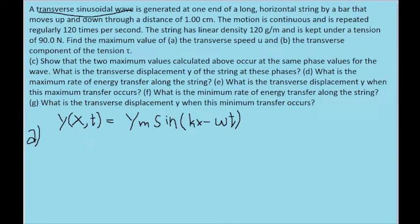Our answer is going to be based on the standard formula for the transverse position of a wave, which is y_sub_m — the amplitude of the wave — times the sine of kx minus omega*t, where k is the wave number, x is the horizontal position on the string, omega is the angular frequency, and t is the point in time we're analyzing. Since part A asks about speed, and speed is position with respect to time, let's take the derivative of this function with respect to t.